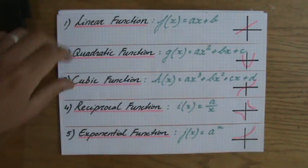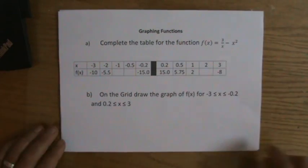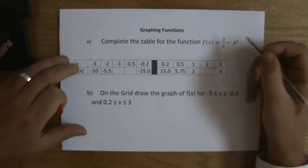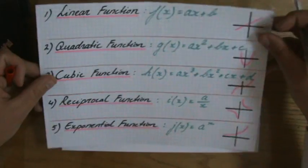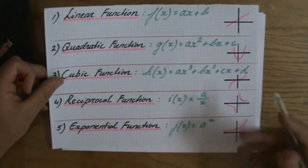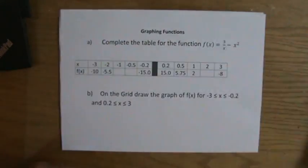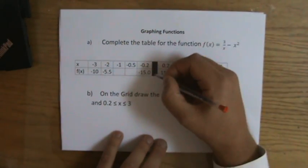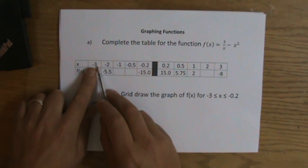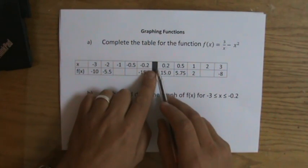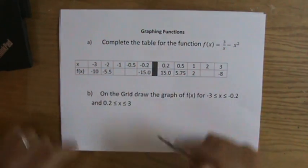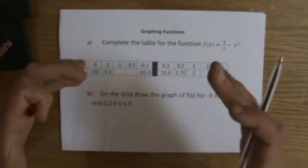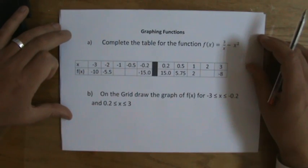Going back to the question: what kind of function do I have? Well, I have an x in the denominator, so I'm going to get some sort of reciprocal function where my graph will consist of two parts. And therefore I understand these blocks in the middle — they give me values of x from minus 3 to minus 0.2, then there is some black space, and then it goes from 0.2 to 3. That must be the asymptote where my curve gets divided.